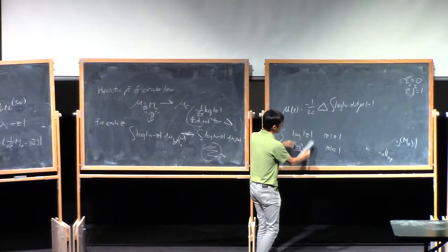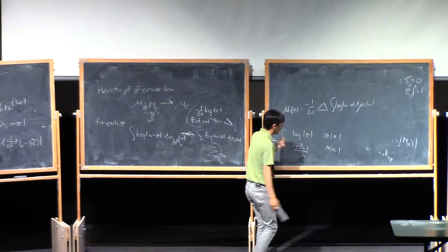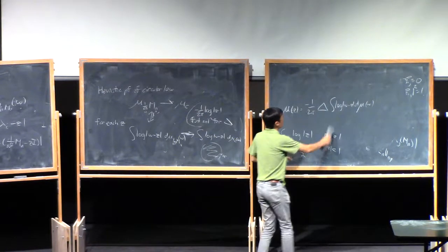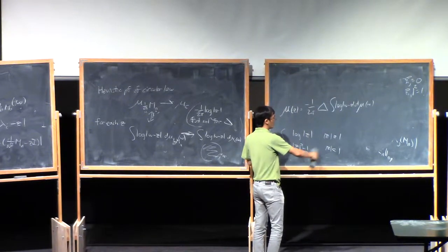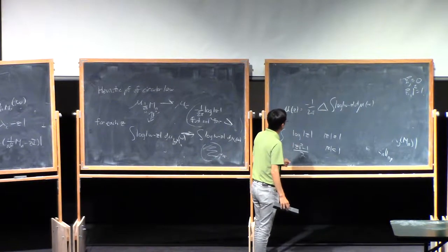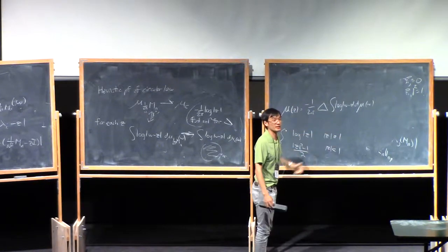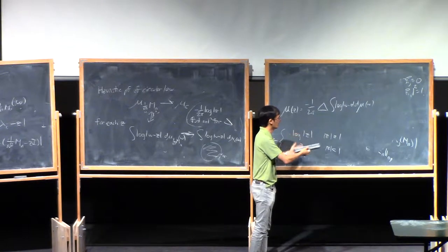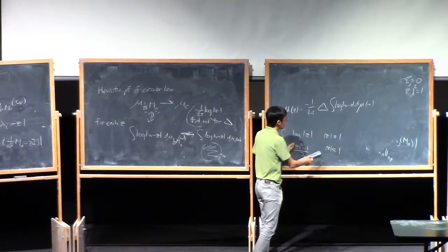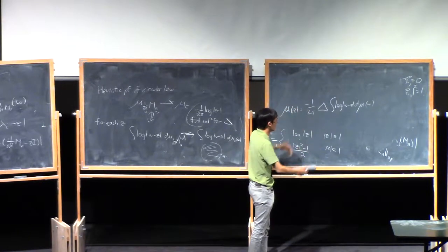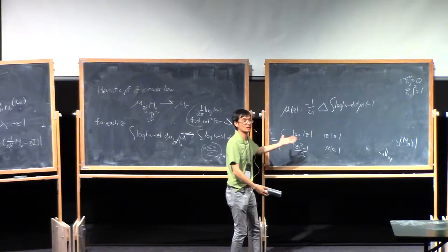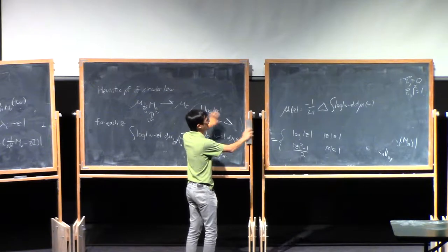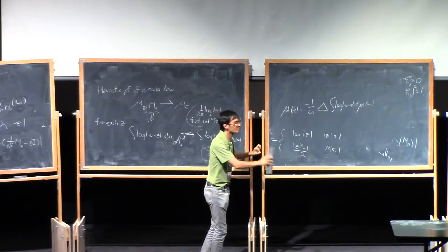These two functions should match. At the boundary when Z equals one, they match to second order — you can check this by direct calculation. If you take the Laplacian of the quadratic function and divide by two pi and put a minus sign, you get the circular law — it's a nice little computation. The quadratic gives a constant of one over pi inside, and log is a harmonic function away from zero so you get zero outside. This heuristic proof is not entirely computation-free, but it has less computation than most other proofs of the circular law.